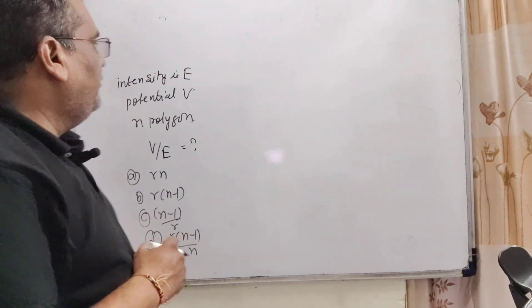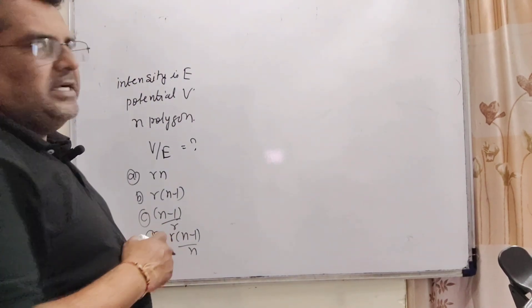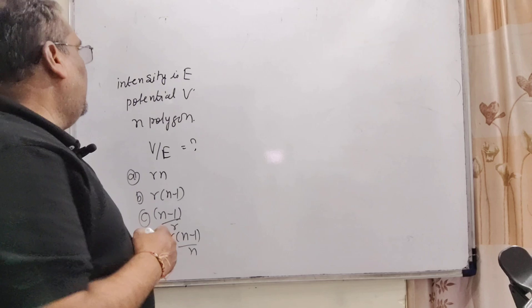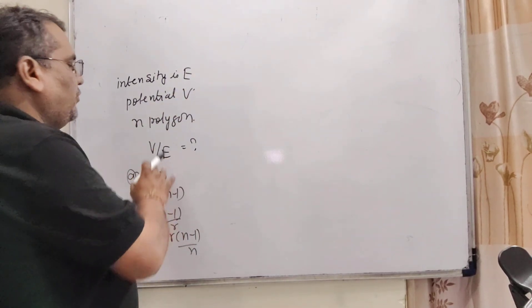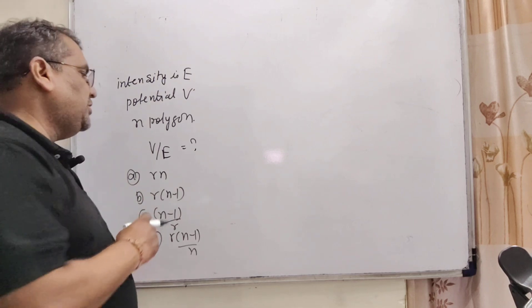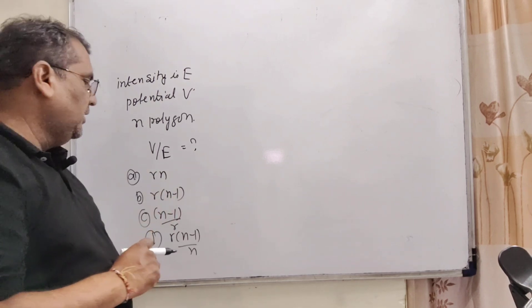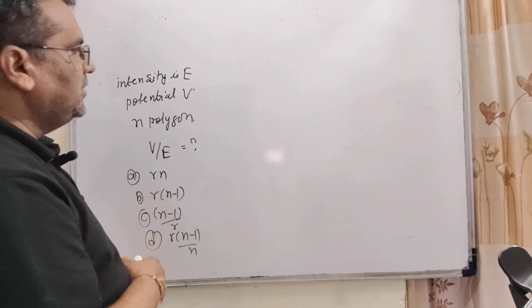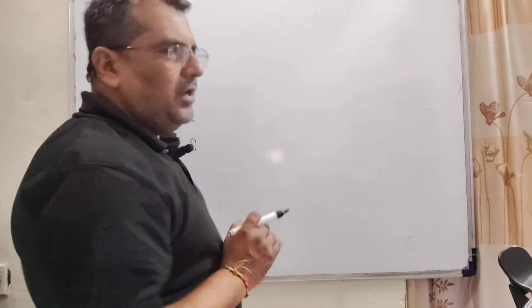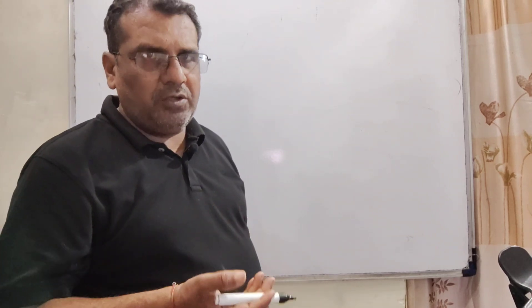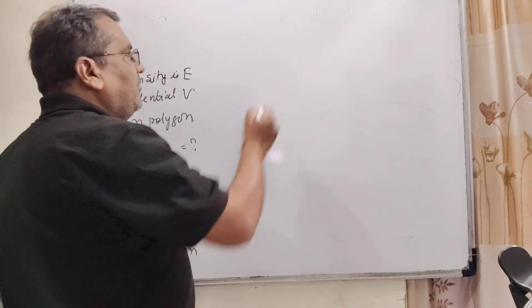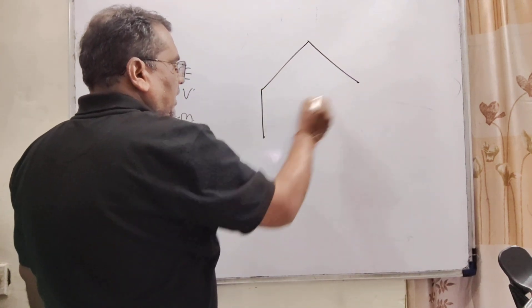Now, what is the question? Here we have given a polygon which sides are n. And here the intensity is E and potential is V. And here we have to find out V by E, means ratio of potential and intensity or electric field. Here we have given these four options. Here that is not clarified that is a polygon that may be hexagonal, may be octagonal. So, here we have considered hexagonal.